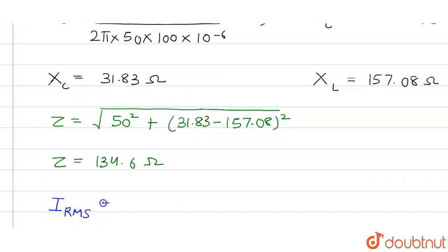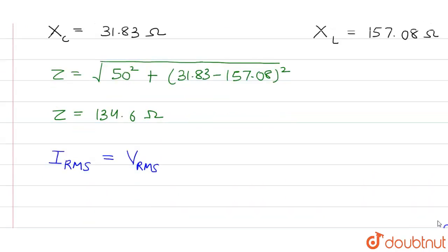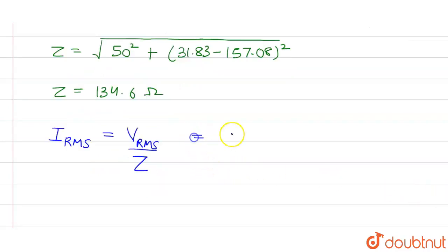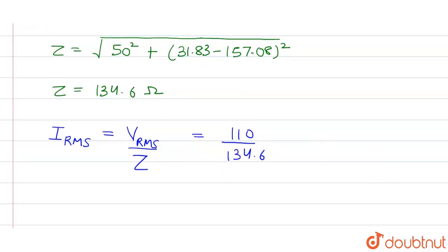I_RMS is given as V_RMS divided by Z. V_RMS in the question is given as 110, so this will be 110 divided by 134.6. Now on solving we will get the RMS value of current as 0.817 which is approximately equals to 0.82 ampere. So this is our answer.